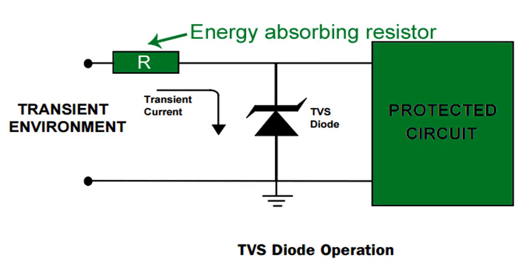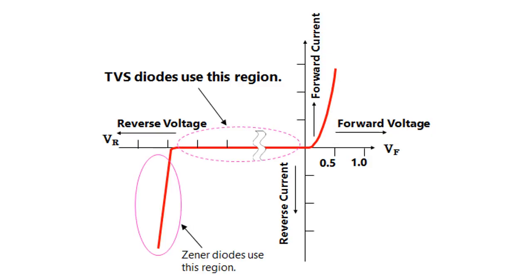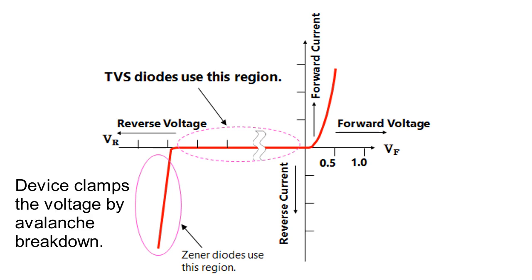Operation: A TVS diode is primarily intended to serve as a shunt voltage clamp across sensitive components in the circuit to prevent high voltage transients from damaging them. Until these transients occur, the TVS diode will be idling at very low standby current levels and appear transparent to the circuit. When a high voltage transient does occur, the device clamps the voltage by avalanche breakdown.